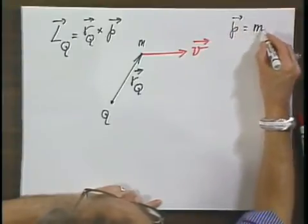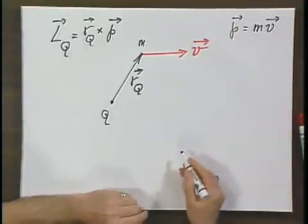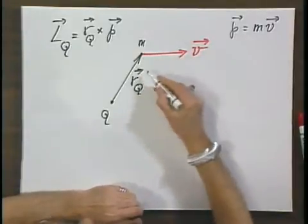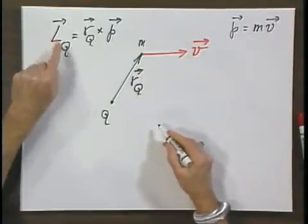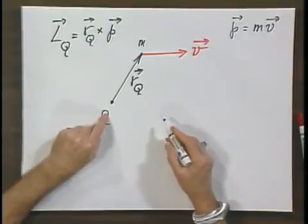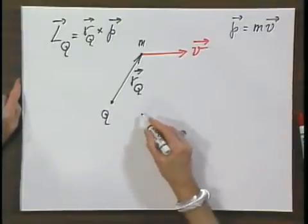P equals M V. That's an intrinsic property of the motion of an object. Angular momentum is not. Angular momentum depends on where I choose my point Q.